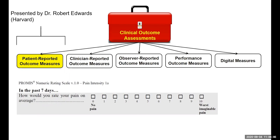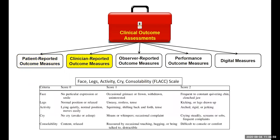When a person can't self-report — because they're too young, too ill, or just don't want to provide that information — we have to rely on other sources of information to inform our evaluation of pain. The next group of tools are clinician-reported measures, where physicians, nurses, or physician's assistants fill out a questionnaire to evaluate a patient's pain.